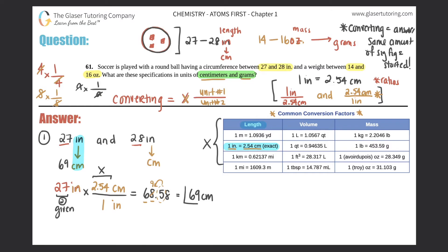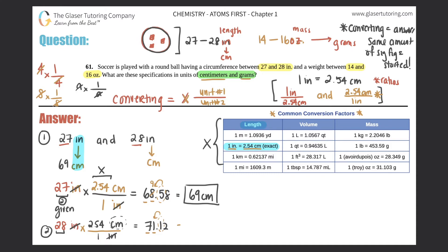Now for 28 inches — same process. Start with 28 inches, multiply by the ratio: inches on the bottom, centimeters on top, 1 inch equals 2.54 centimeters. The inches cancel, leaving centimeters. 28 times 2.54 equals 71.12. Two sig figs: the 7 and the 1 stay, and the next digit tells us the 1 stays, giving 71 centimeters.